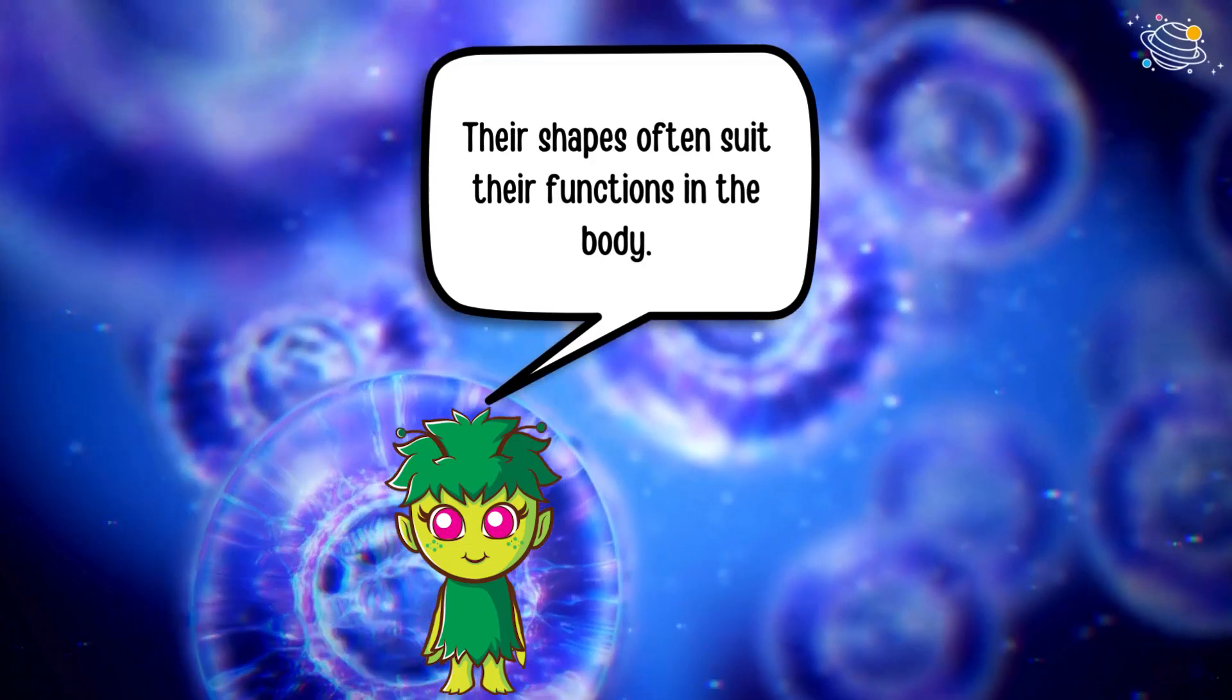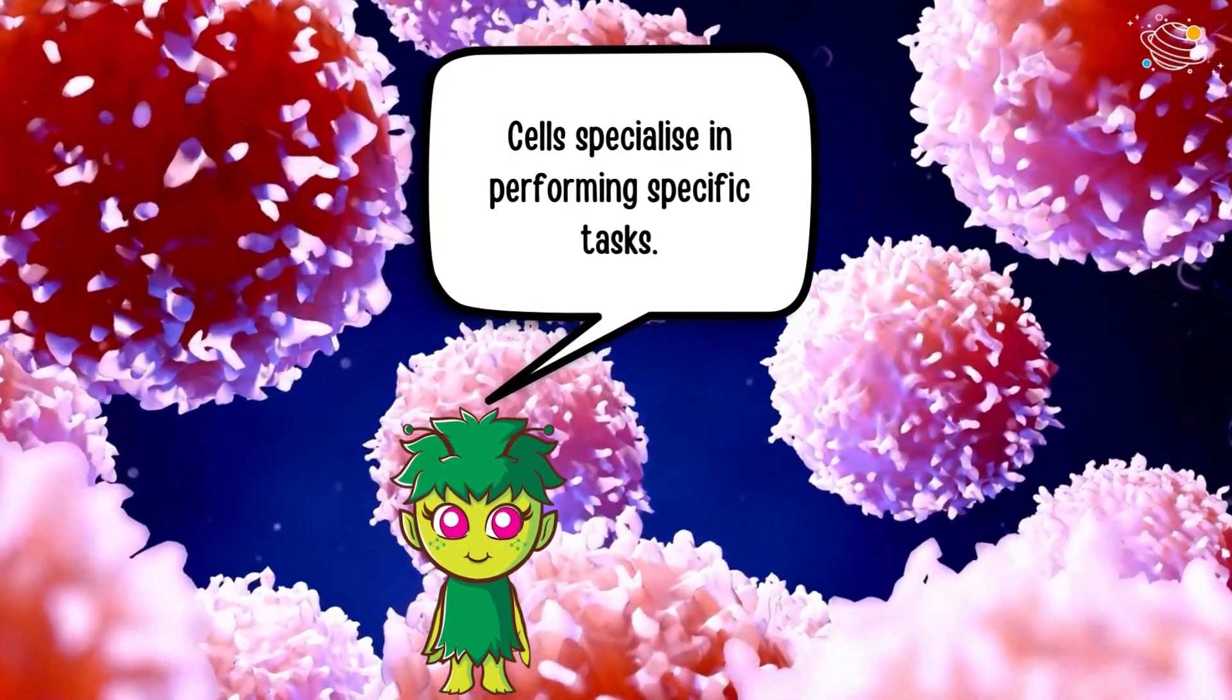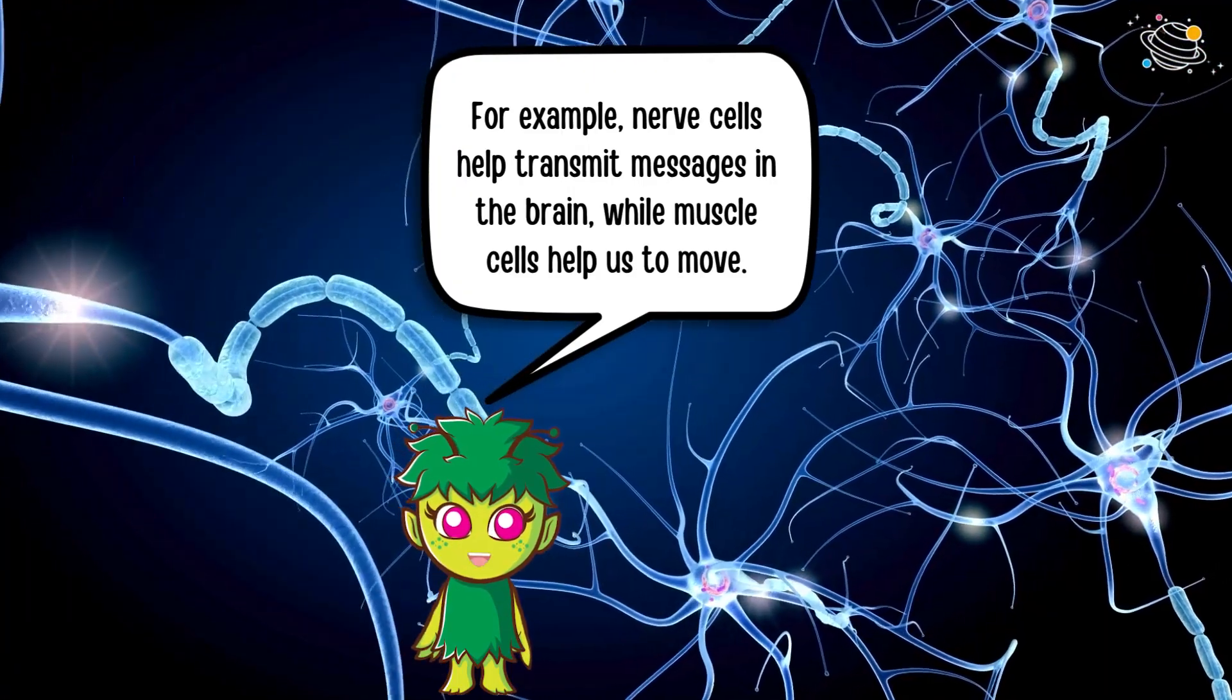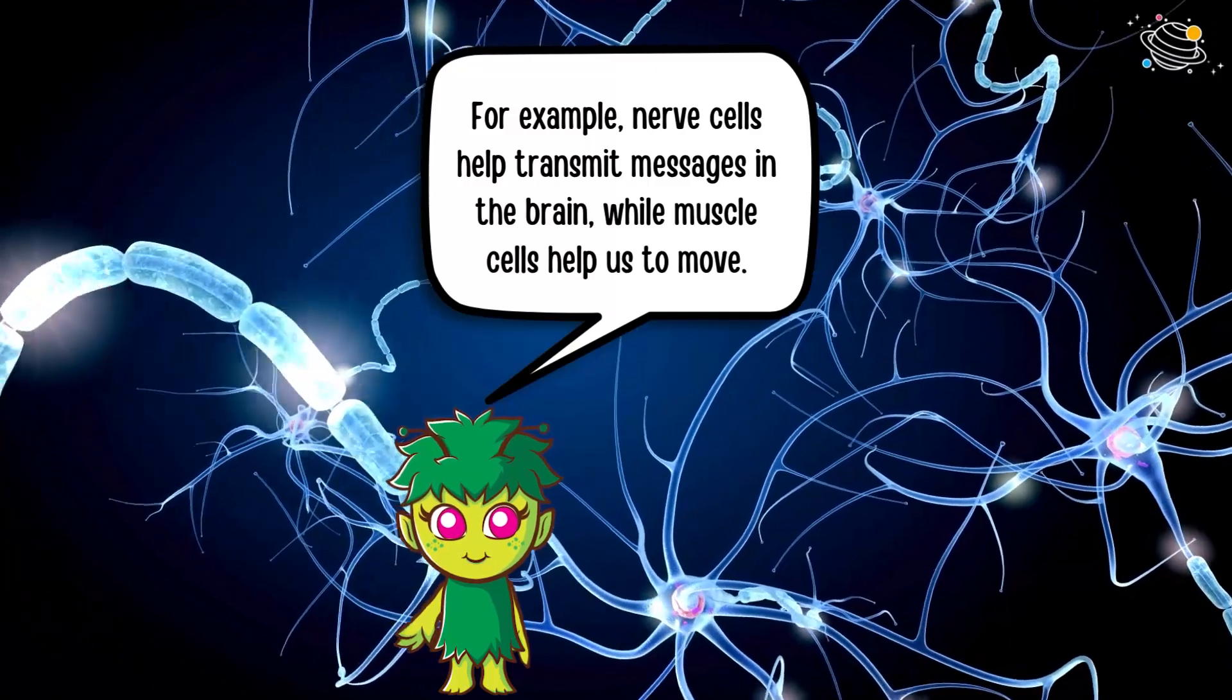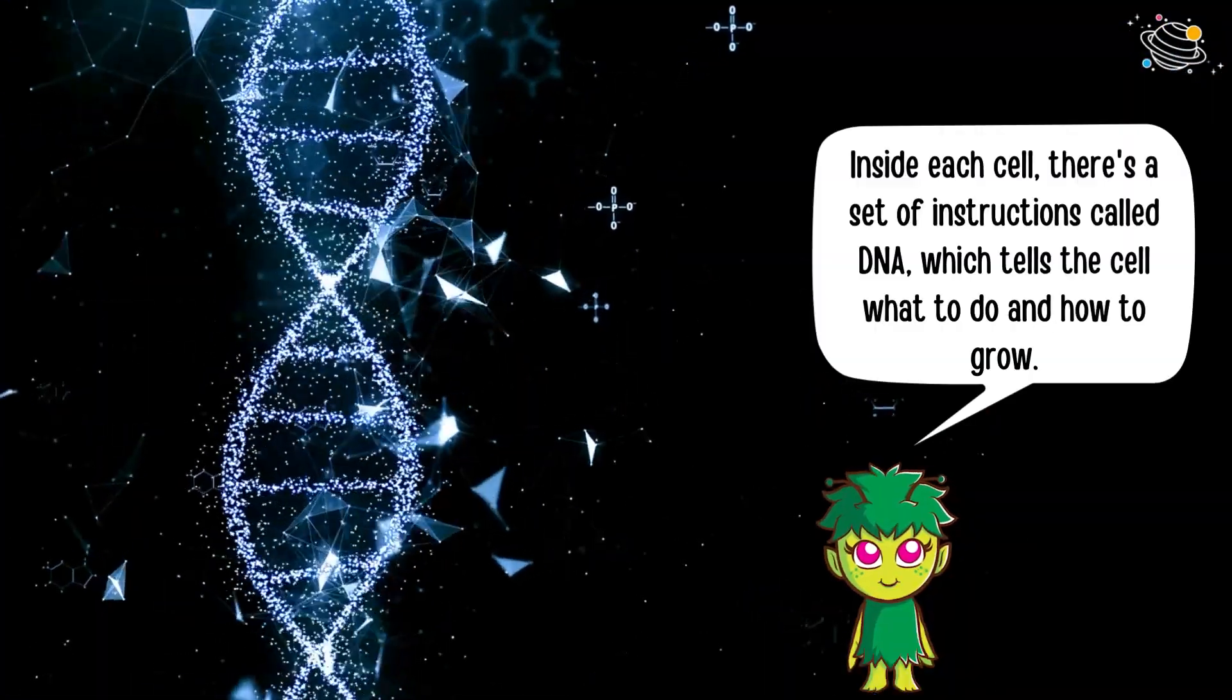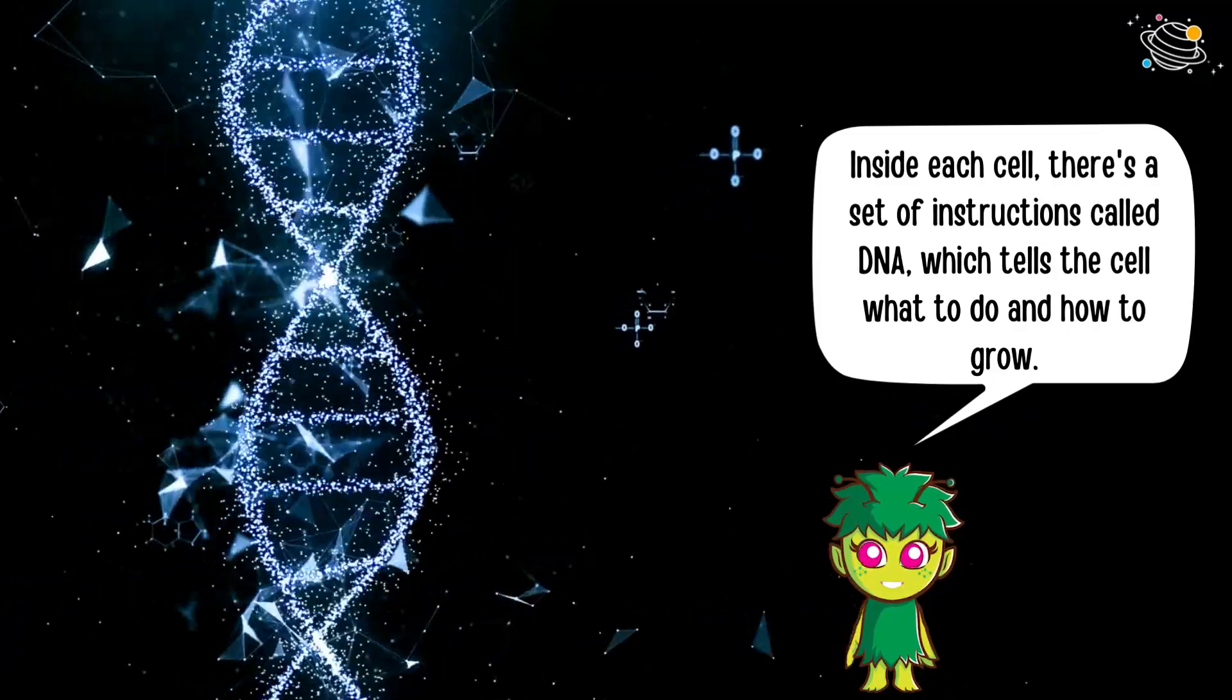Cells specialize in performing specific tasks. For example, nerve cells help transmit messages in the brain while muscle cells help us to move. Inside each cell there's a set of instructions called DNA, which tells the cell what to do and how to grow.